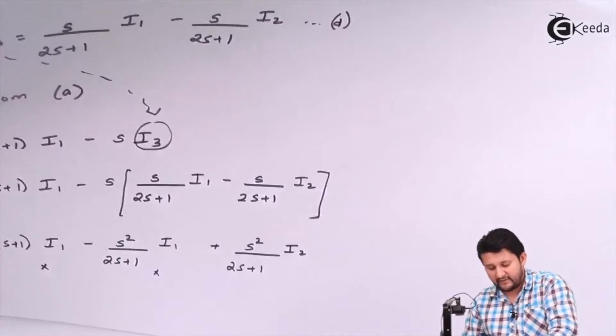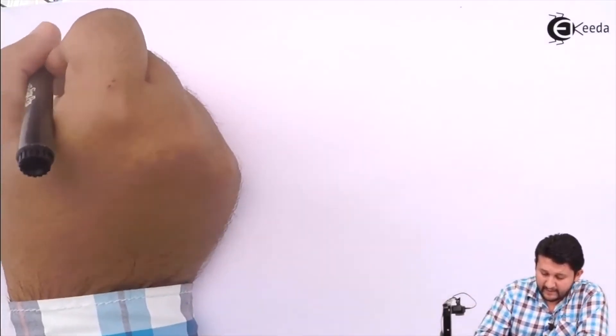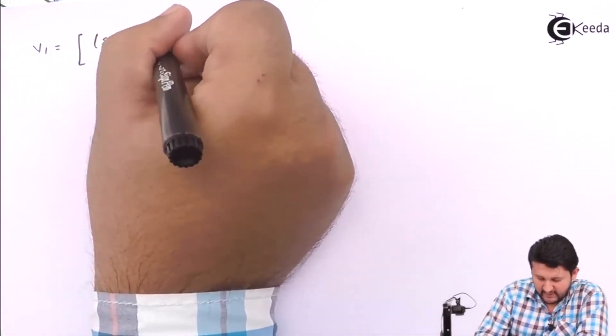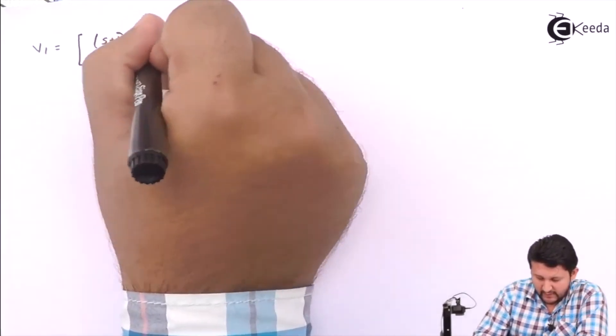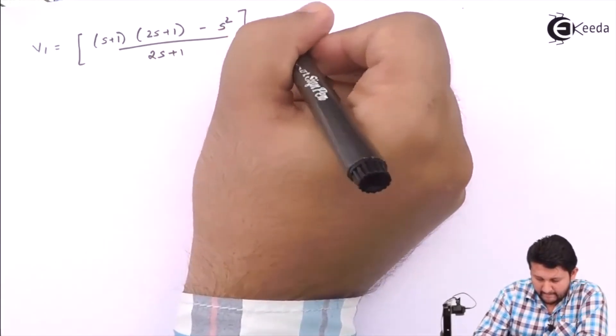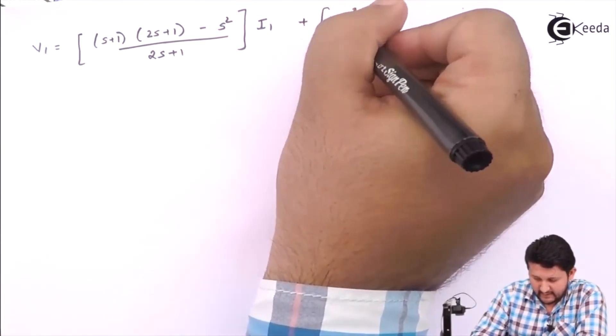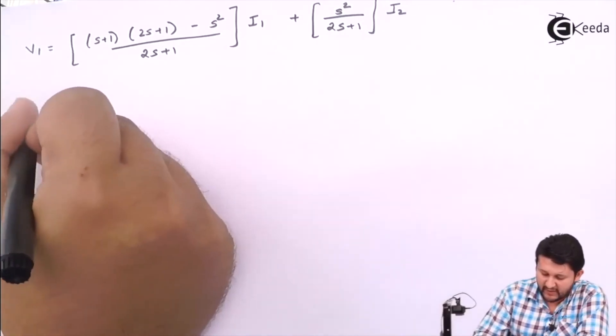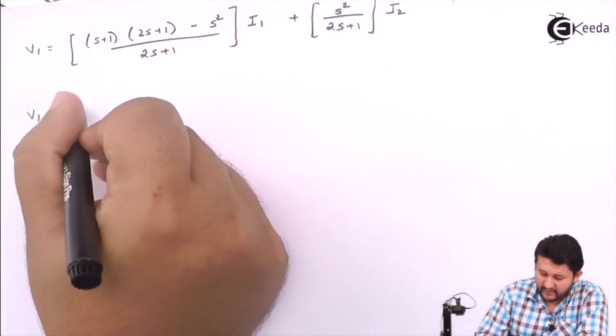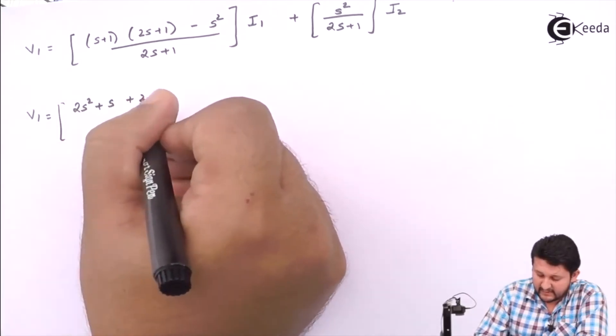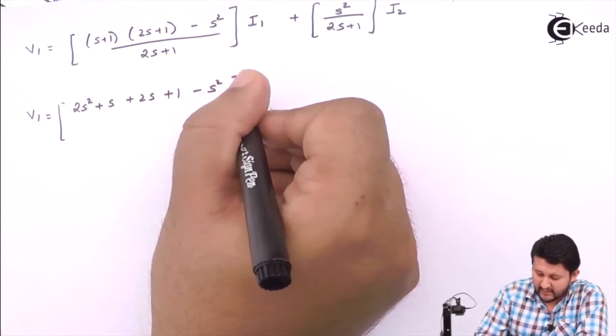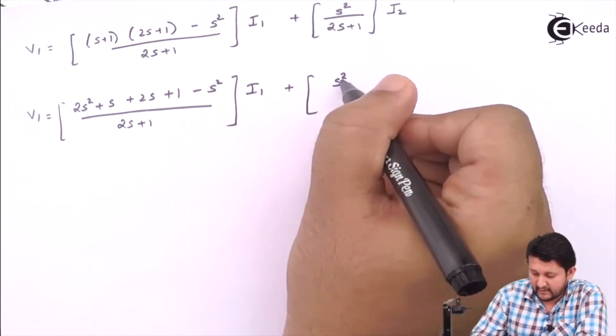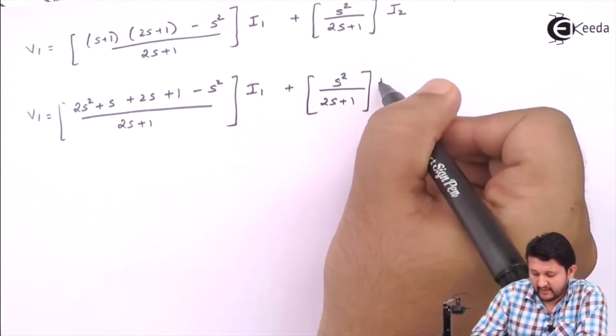Multiply it. So V1 will be equal to (s+1)I1 minus s²/(2s+1)I1, minus minus becomes plus s²/(2s+1)I2. Simplify the terms. You have two I1 terms to combine and I2 terms to combine. If I take I1 common, the equation which I get is V1 equals, let me take (2s+1) common in the denominator.